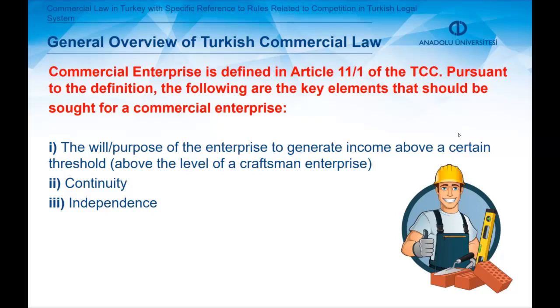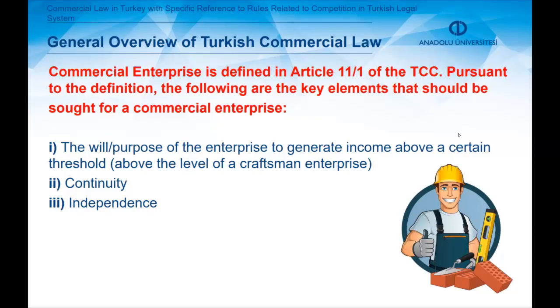Continuity and independence are also key elements of a commercial enterprise. The second book of the TCC regulates commercial companies, where types of companies and rules regulating companies from establishment to dissolution are set forth, along with the liabilities of operation of different types of companies.